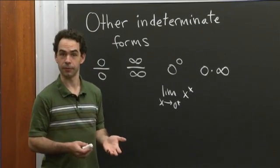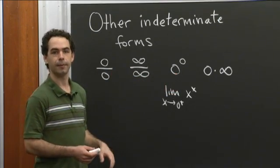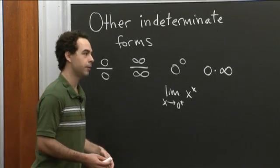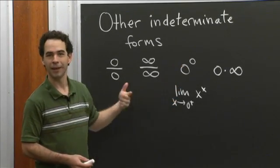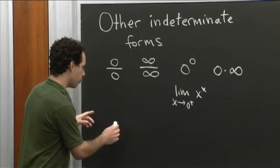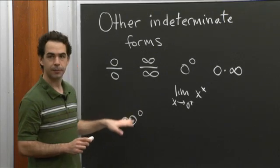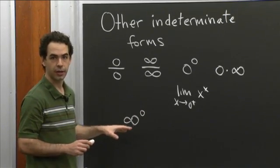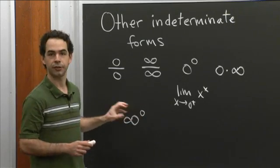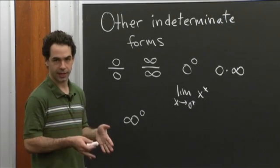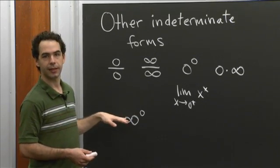There are a few other indeterminate forms I'd like to mention — three others not different from these. There are two more that are sort of exponential indeterminate forms, and one sort of outlier. One of the other indeterminate forms is infinity to the 0. When you have an exponential expression where the base is getting very large and the exponent is going to 0, the base getting large makes the whole expression want to be large, whereas the exponent going to 0 makes the whole expression want to get closer to 1. Those two forces are in tension, and you can end up with limits that equal any value with a limit like infinity to the 0.